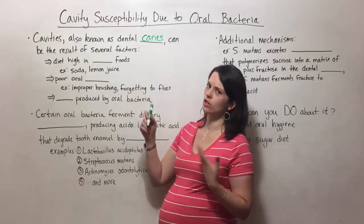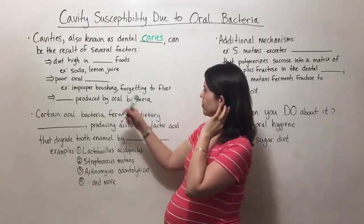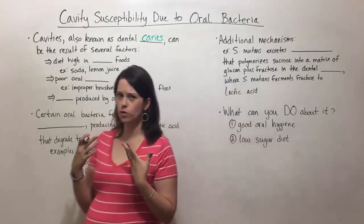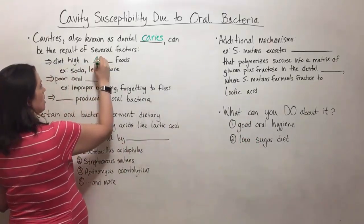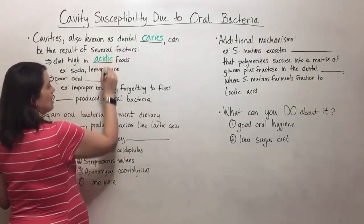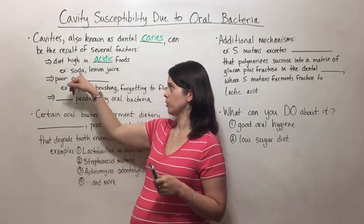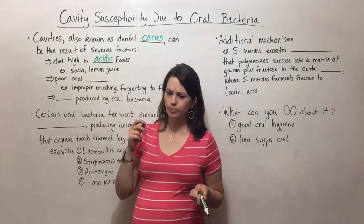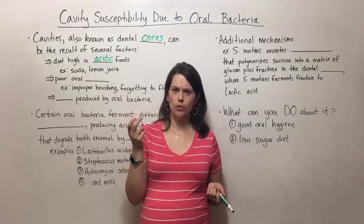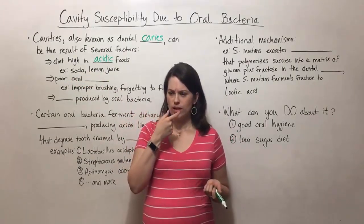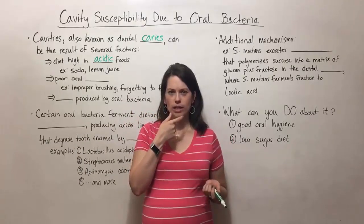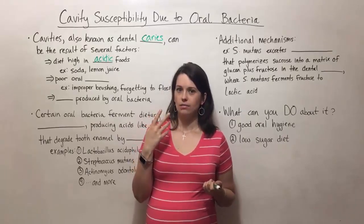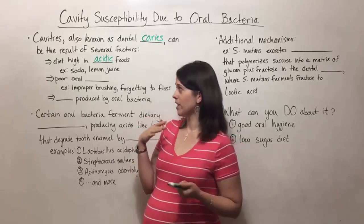Cavities can be the result of several factors. One is a diet high in acidic foods — if you are eating a lot of food that has an acidic nature, that acid can break down your enamel. This would be like drinking soda several times a week or having a lot of lemon juice. My mom knew someone who would suck on lemon wedges and that degraded their tooth enamel, giving them lots and lots of cavities.